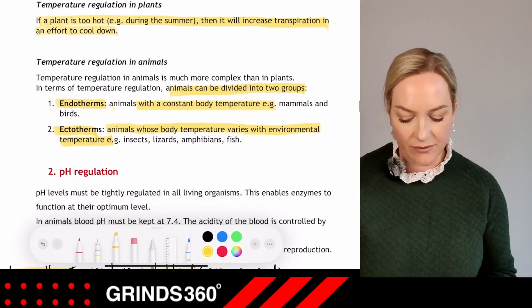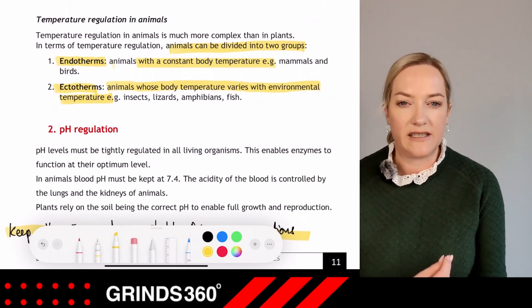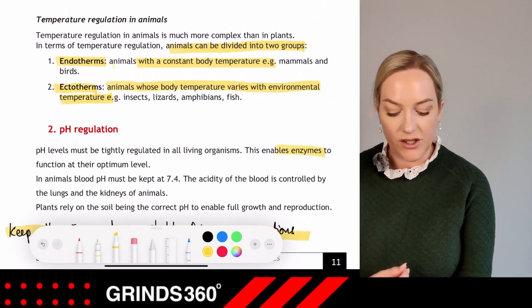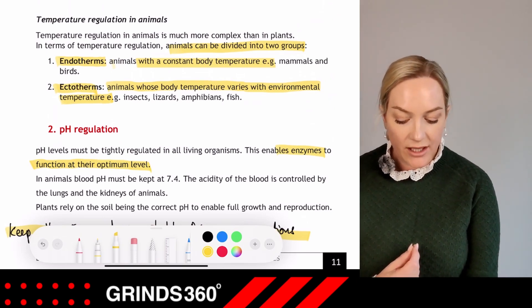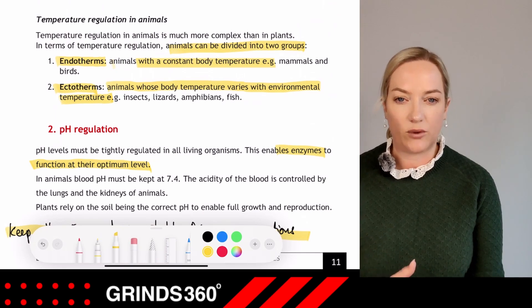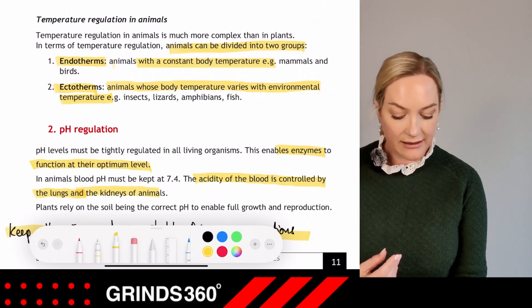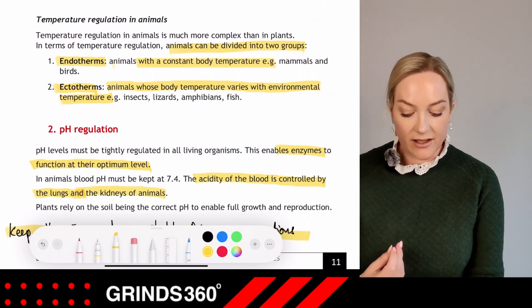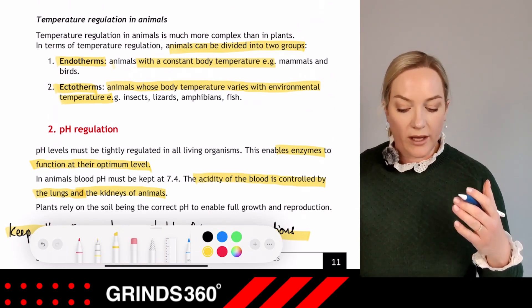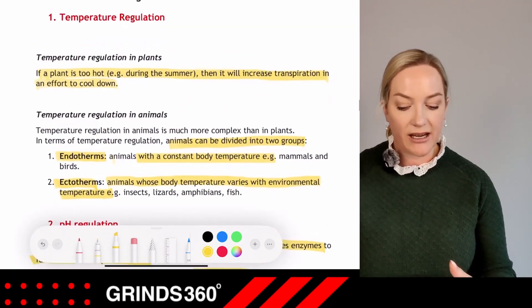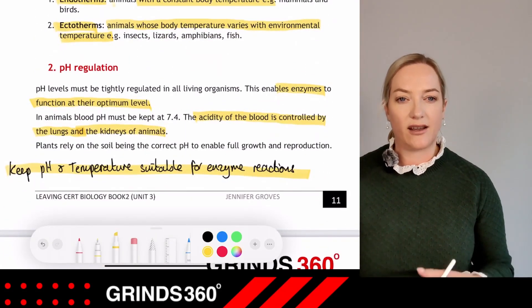pH regulation: pH levels must be tightly regulated in all organisms to enable enzymes to function at their optimum. In animals, blood pH must be kept at 7.4, and the acidity of the blood is controlled by the lungs and kidneys. Plants rely on the soil being the correct pH to enable their full growth and reproduction. With both temperature and pH regulation, the goal is to keep conditions suitable for enzyme reactions.